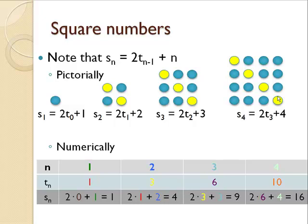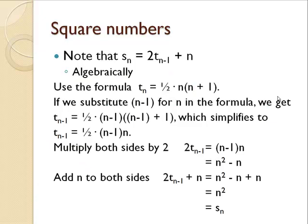Algebraically, we can do the same sort of thing. Again, I'll use the formula for T sub n, ½ times n times n plus 1. Substituting n minus 1 for n in the formula gets me down to this formula we had a few slides ago. T sub n minus 1 is ½ times the quantity n minus 1 times n.